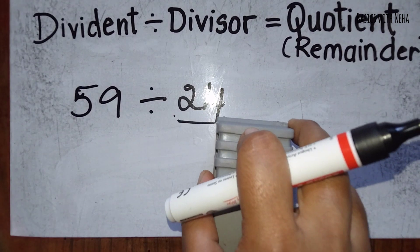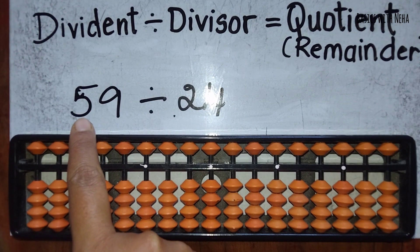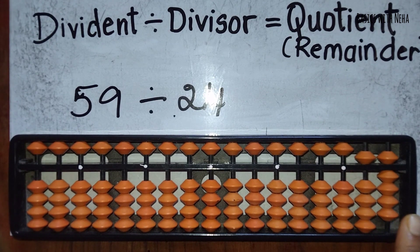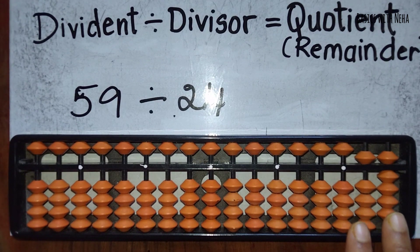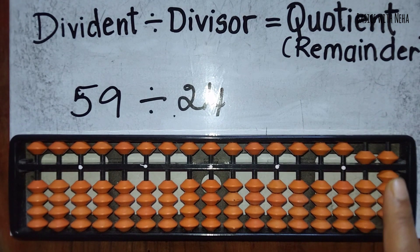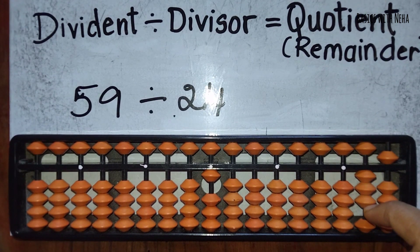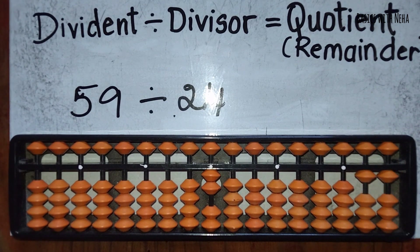Now let's solve 59 divided by 24 on the abacus. Place 59 in the dividend side. The divisor is 24. Consider two rods since 24 is smaller than 59. Take 24 ones — that is 24 — and subtract from 59, leaving 35. Since 35 is still larger than 24, take 24 ones again, subtract 24, leaving 11. The quotient is 2 and the remainder is 11.